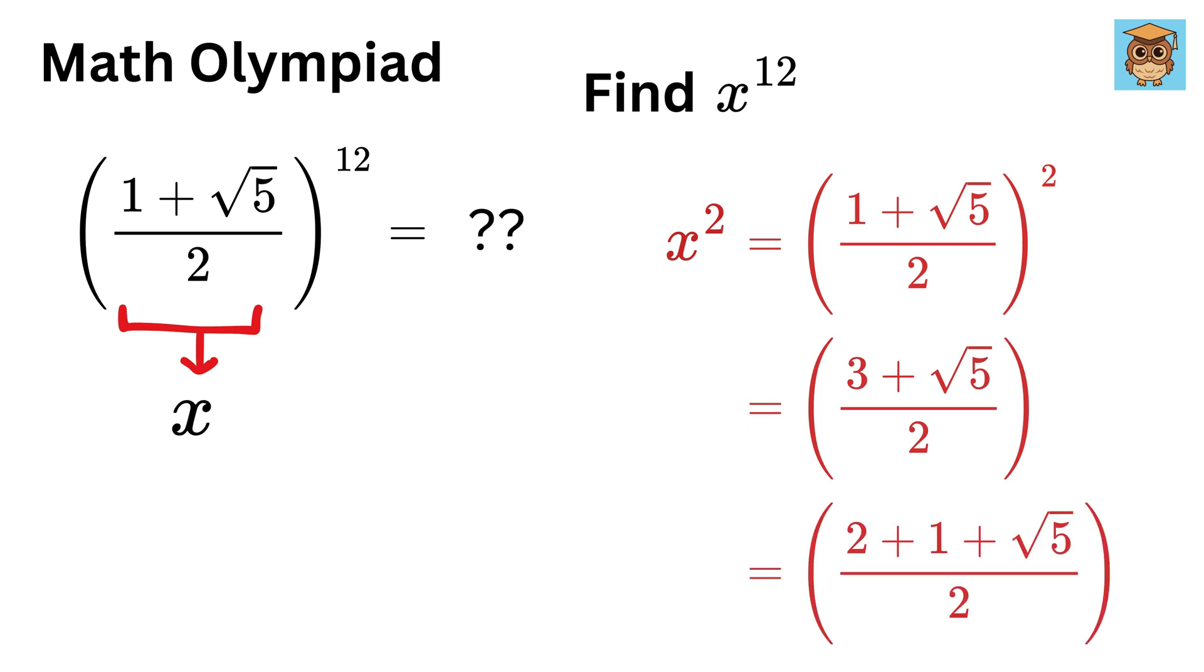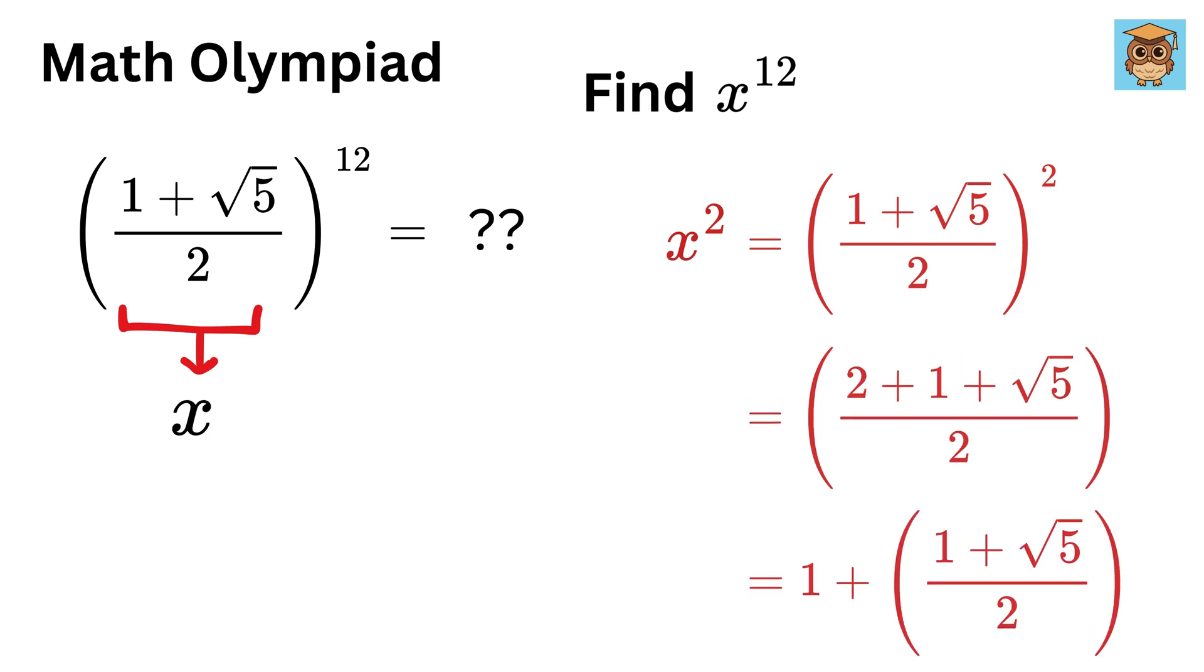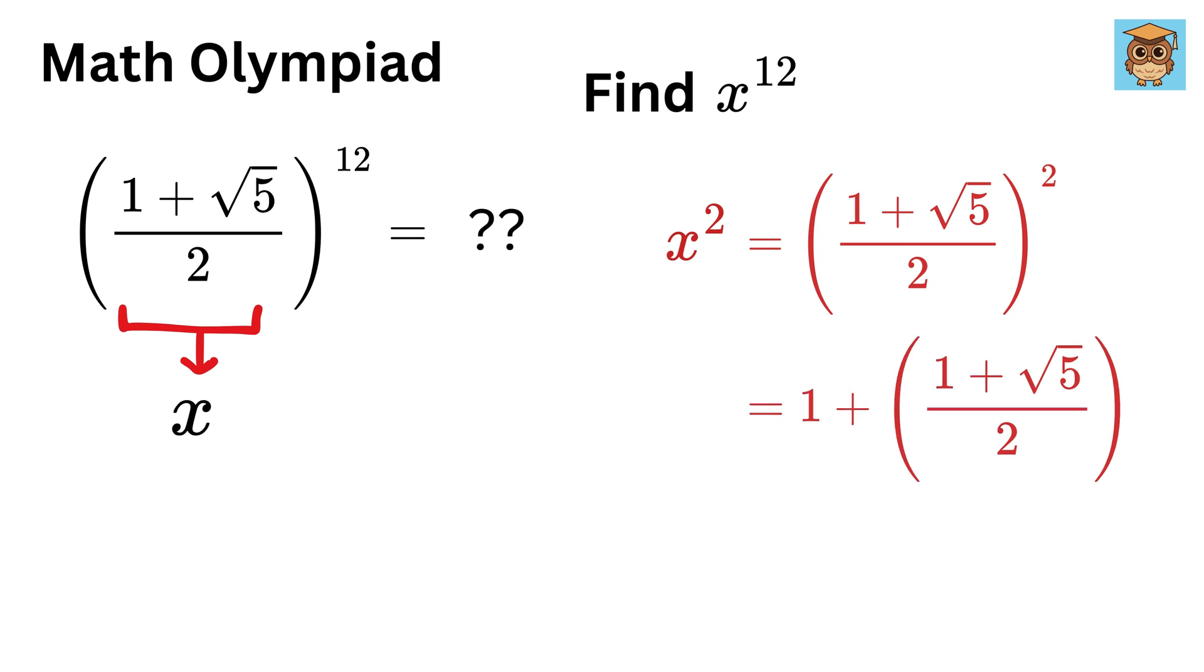we get x² = (3+√5)/2. We can also write it as 2 + (1+√5)/2, which is 1 plus this term. Now this is the same as x, so x² = 1+x.